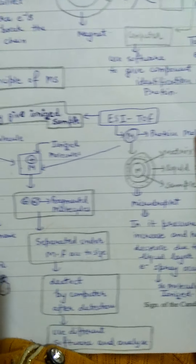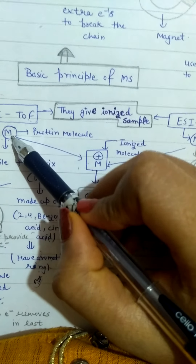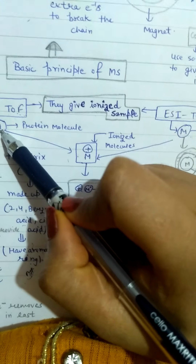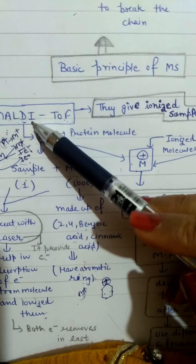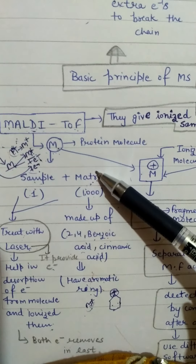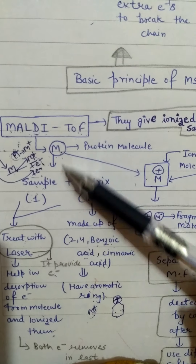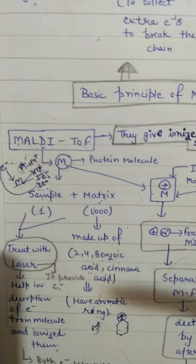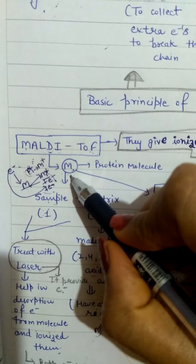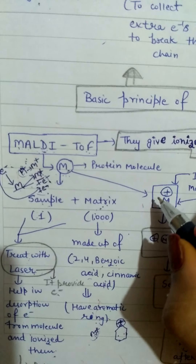Hello everyone, welcome again. In the last video we studied about MALDI-TOF, where we represented our protein sample. We studied the matrix-assisted laser desorption ionization time-of-flight method. We took a sample and matrix, ionized our sample molecule with laser help, and applied the mass spectrometer principle. In MALDI-TOF, laser was used to remove our sample from the ionizer.